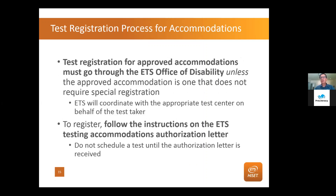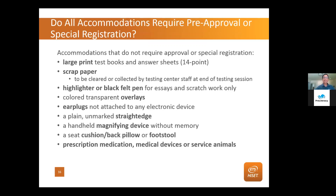Disabilities accommodations have to go through our ETS office, and then we coordinate with the test center to provide the accommodation. Some things don't require formal accommodation — you can get larger print, highlighters, earplugs, straight edges, and things like that. If you're not sure, just email Disability Services or give them a call.